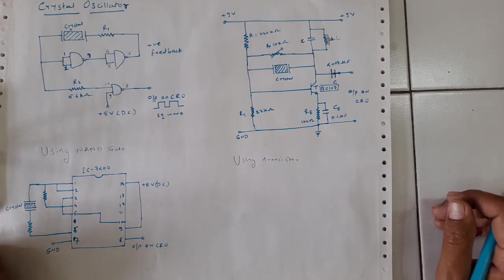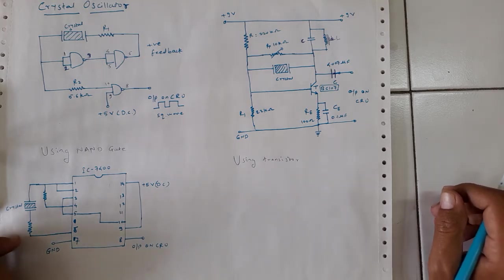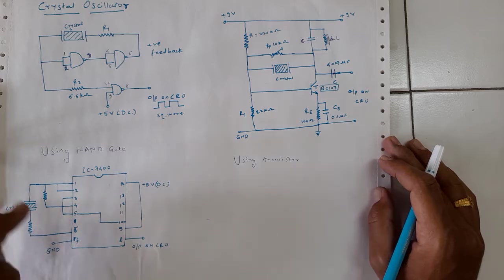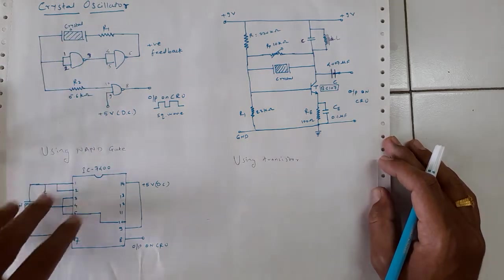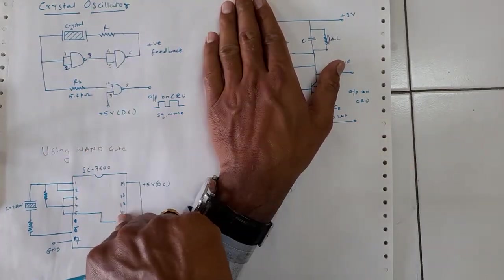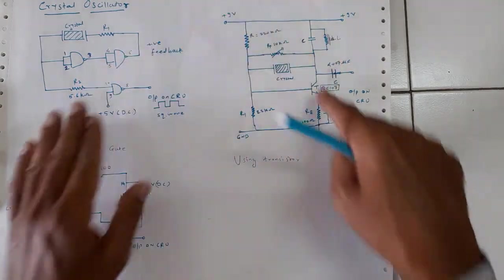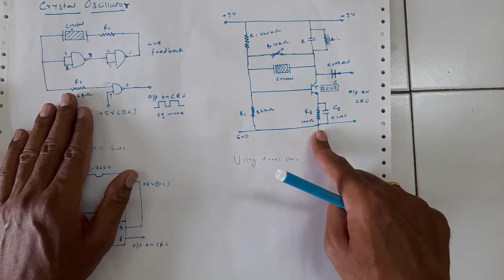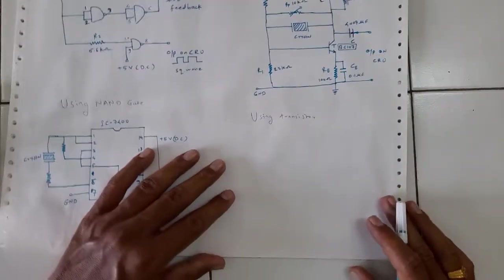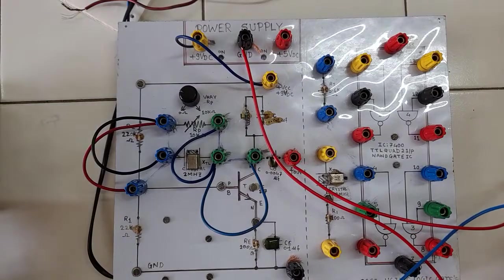There are certain materials which show piezoelectric properties in nature — actually only three: tourmaline, Rochelle, and quartz. These three crystals show the piezoelectric effect. Crystal oscillators can be studied by two methods: one is by using NAND gates, and the other is using transistor-based properties.